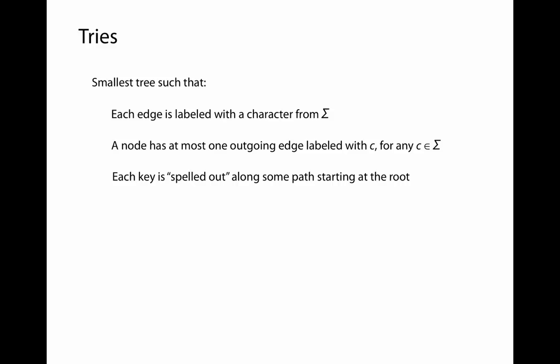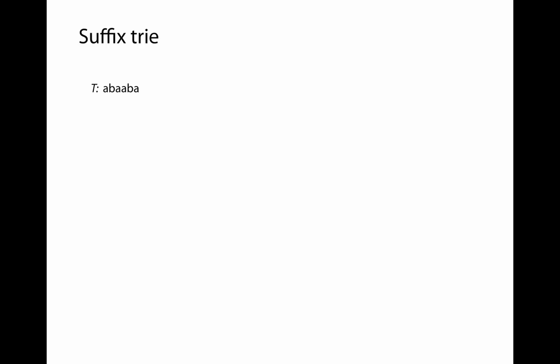A trie is the smallest tree such that each edge is labeled with some character from our alphabet sigma. A node has at most one outgoing edge labeled with character C, and each key is spelled out along some path starting at the root. To make a suffix trie, we add the special dollar sign character to the end of T, and then build a trie of all suffixes of T dollar sign.